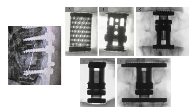Reconstruction after corpectomy can be accomplished with cement (PMMA with a K-wire) injected around the spinal cord from the back, with caution due to heat generation. Alternatively, various cage types are available: static cages with fixed height, or expandable cages. Cages with long rectangular end plates spanning the entire end plate are preferred because the apophyseal ring is most robust posterolaterally, helping prevent long-term subsidence.